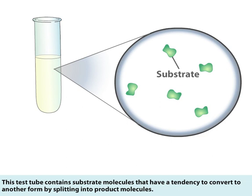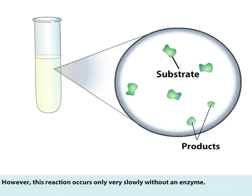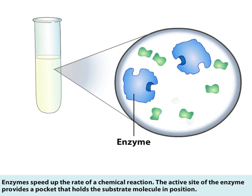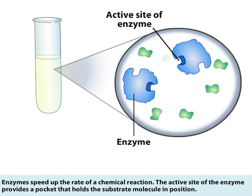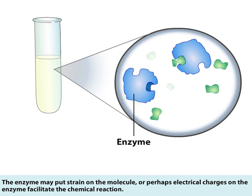This test tube contains substrate molecules that have a tendency to convert to another form by splitting into product molecules. However, this reaction occurs only very slowly without an enzyme. Enzymes speed up the rate of a chemical reaction. The active site of the enzyme provides a pocket that holds the substrate molecule in position. The enzyme may put strain on the molecule, or perhaps electrical charges on the enzyme facilitate the chemical reaction.